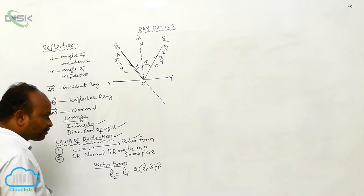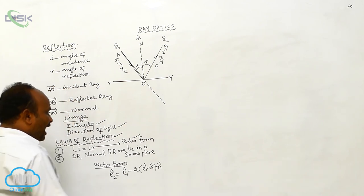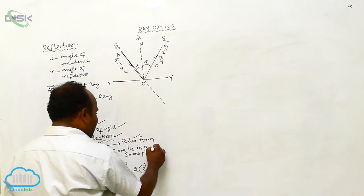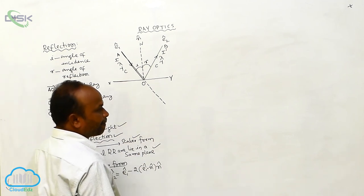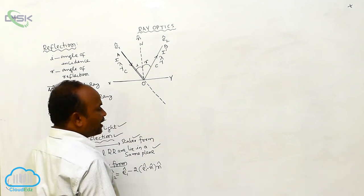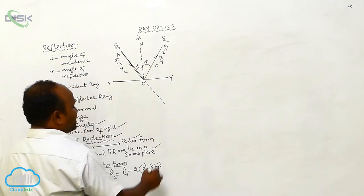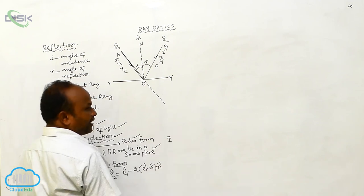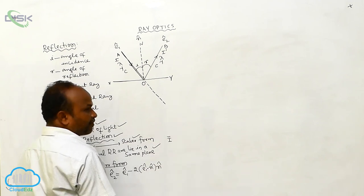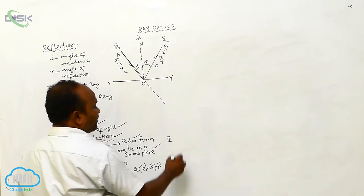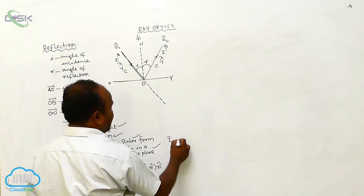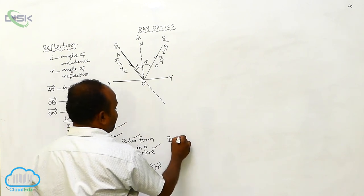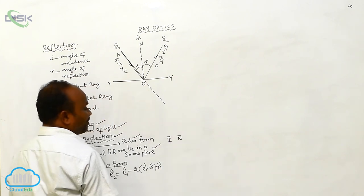As the incident ray, normal, and reflected ray lie in the same plane, the incident ray can be represented by a vector i cap and the normal by n cap.